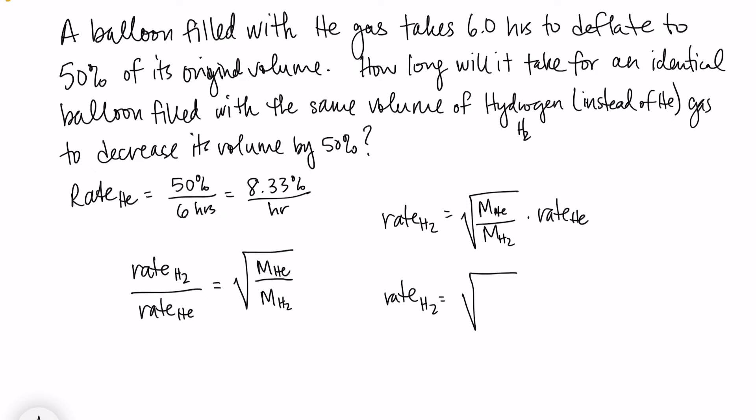Molar mass of helium is going to be 4. Molar mass of hydrogen is going to be 2. I'm rounding a little bit, so bear with me. And our rate we calculated is 8.33% per hour. So when I do this math, I'm going to get my rate for hydrogen of 11.78% per hour.